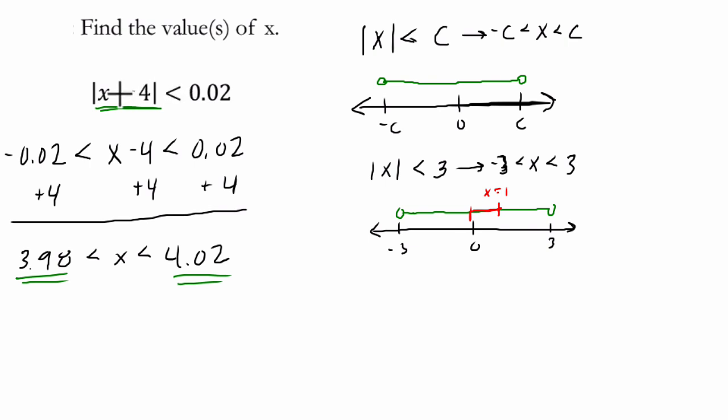So what numbers, when you subtract them from 4, have a distance from 0 less than 0.02? It's these two numbers. Numbers that are within 0.02 of 4.